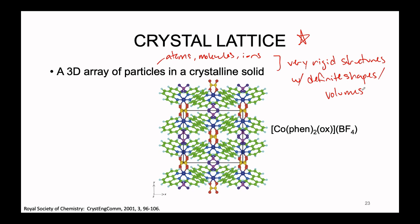Here on the slide is an illustration of a really beautiful crystal whose chemical formula looks fairly complicated — a little beyond the scope of this class. We have a bunch of cobalt, benzene, oxalate which we've worked with in lab, and a tetrafluoroborate negative polyatomic ion as well. Due to the complicated size and shape of this individual molecule, the crystalline solid that forms is going to have a pretty complicated picture as well.